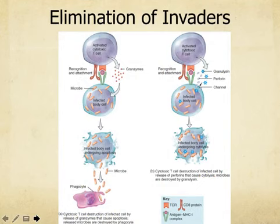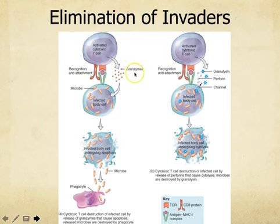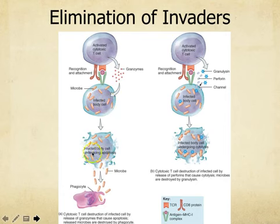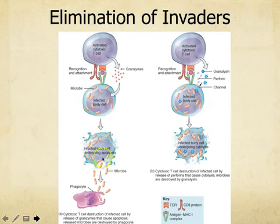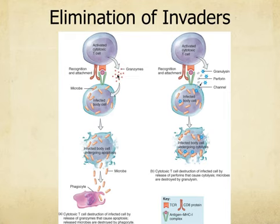Cytotoxic T cells have a couple of tools in their toolbox. Here's an infected body cell — the cytotoxic T, already activated with co-stimulation, releases something called a granzyme. That granzyme breaks into the infected body cell and causes it to undergo apoptosis, essentially causing it to burst. The microbes infecting the cell get released and can no longer hide inside the cell, so a macrophage or other phagocyte can come along, gobble them up, and destroy them.